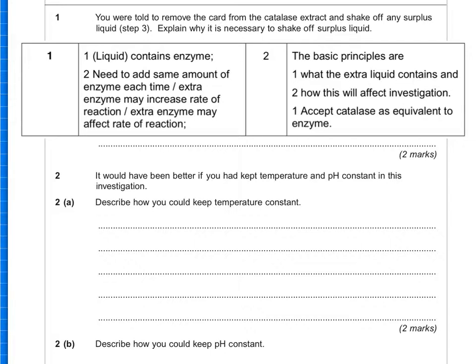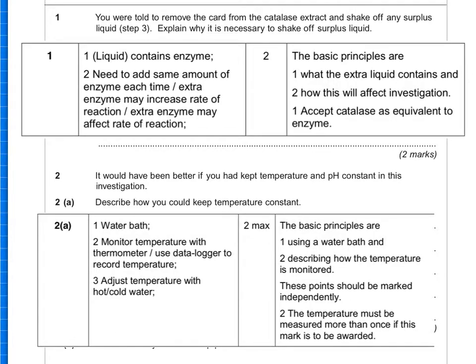Question two says that it would have been better if you kept temperature and pH constant in this investigation because those things can affect enzyme action. Describe how you would keep temperature constant. And this is pretty much the same for a lot of different experiments. You'd use a water bath. Why would you use a water bath? Because you can control the temperature, but also to ensure the temperature stays the same, you would need to monitor that temperature with a thermometer or I'd probably use a data logger instead. Usually though, when you do use a water bath, the temperature doesn't fluctuate very much actually. But you must measure it and you must measure it more than once.